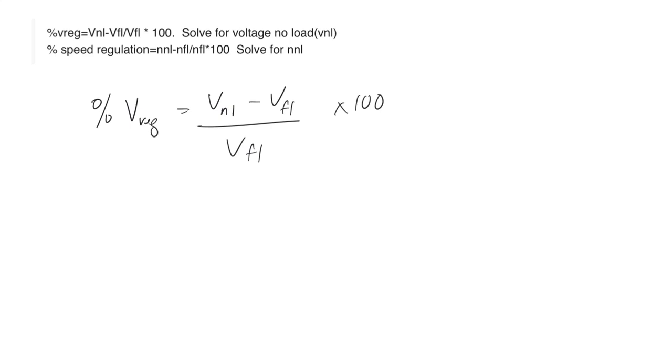All right, here's a good question. You need to manipulate this formula to solve for voltage no load. So that's this one. I always like to circle the thing I'm looking for. And the idea is I've got to get the voltage no load on the side of the equal sign by itself.